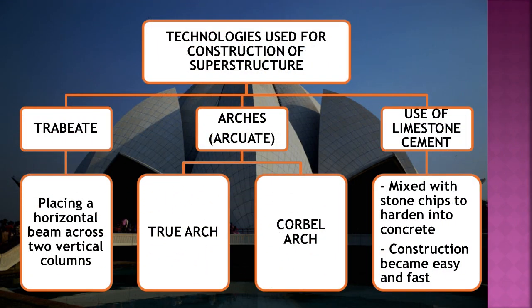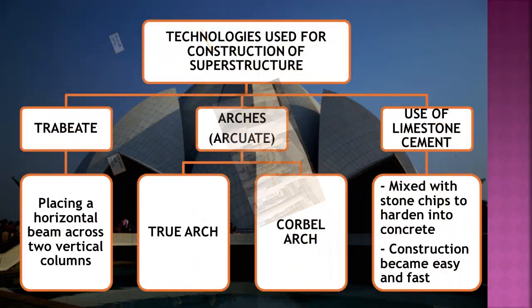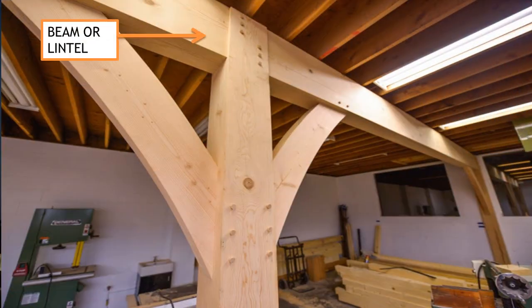The first technique is Trabeate. Trabeate means placing a horizontal beam across two vertical columns. A column is also called a post — these are vertical pillars. The beam is placed horizontally over the columns and is also called a lintel. The beam supports the roof.